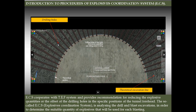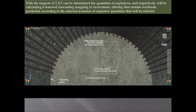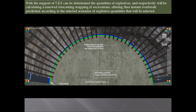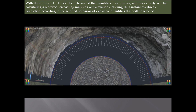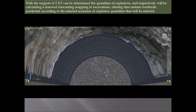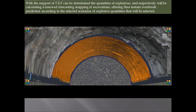We introduce the procedures of the Explosives Coordination System — the so-called ECS. ECS cooperates with the TEF system and provides recommendations for reducing explosive quantities or the offset of drilling holes at specific positions of the tunnel forehead. ECS analyzes the behavior of each particular geology when excavated via the drilling blast method, determining suitable quantities of explosives for areas where excavation failures have occurred in the past. With TEF support, quantities of explosives are determined and a renewed forecasting mapping is calculated, offering instant overbreak prediction in accordance with selected explosive quantity scenarios. Excavations will become smoother, approaching the theoretical line of excavations and avoiding costly filling of concrete and additional working procedures.